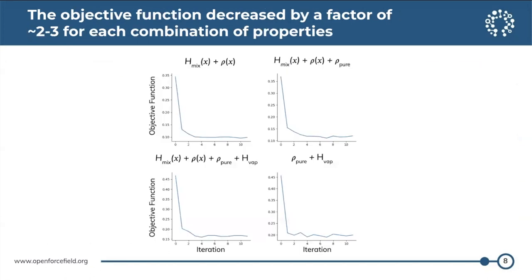For each of the four training sets, we did our optimizations using our automated fitting infrastructure. The objective function of the fit as a function of optimization iteration decreased almost immediately by a factor of about two to threefold for all four optimizations, so it does seem like our optimization is pushing things in the right direction. Looking at the RMSEs of the different properties at the beginning and end of optimization, almost universally things improved, with the exception of maybe one outlier I won't go into here.